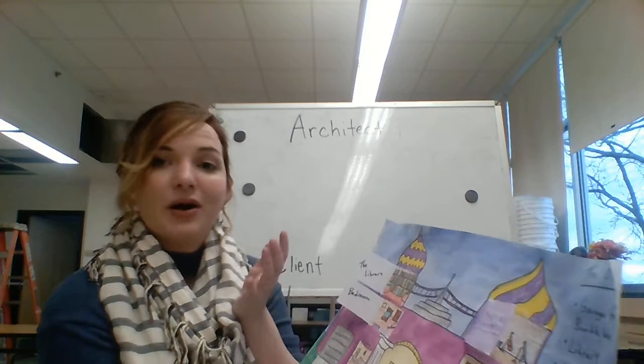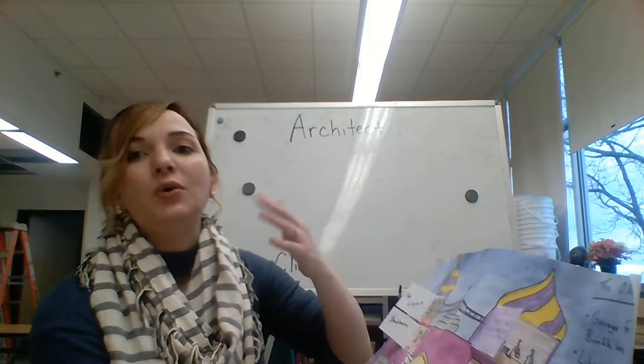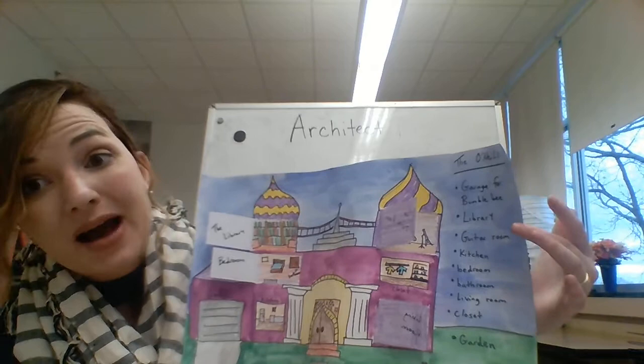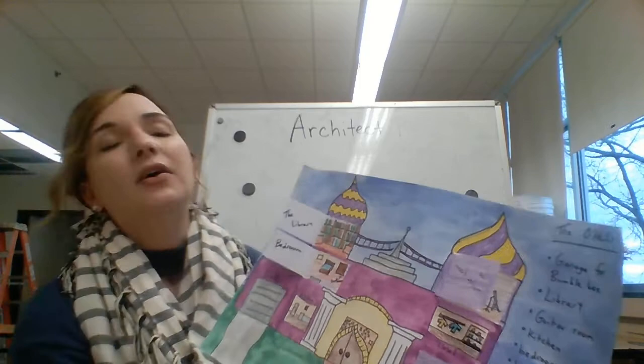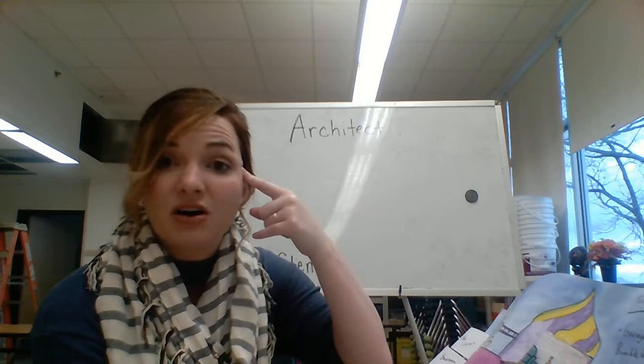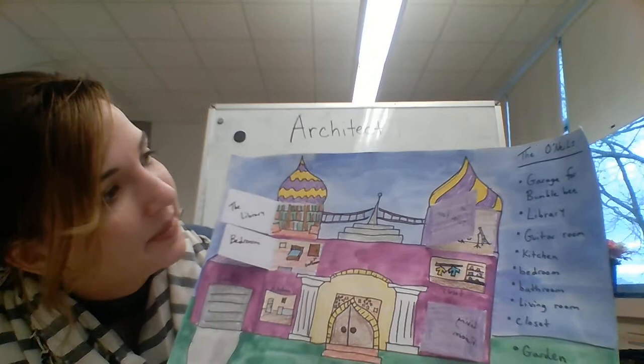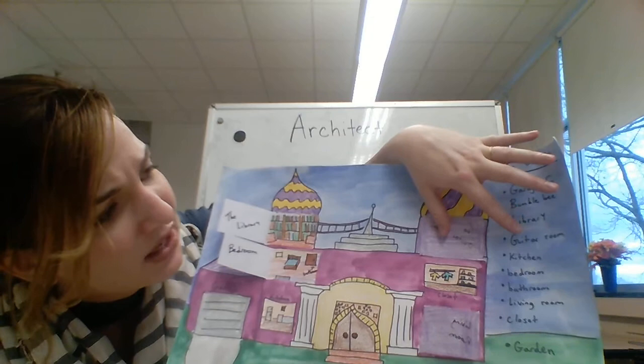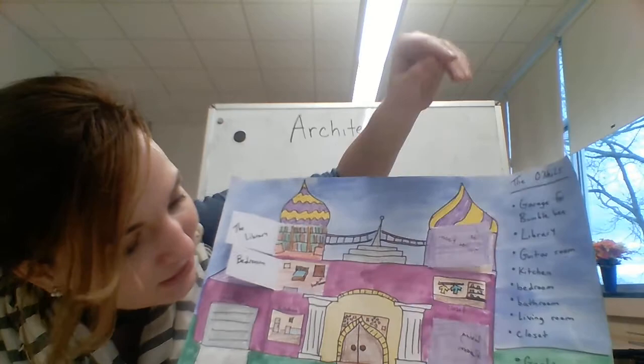My only requirement is that if you choose your client, you have to know something about them, because you've got to know something about them to do this next step. I chose the O'Neills and I know some things about us, so I made a list of things that we would like in a house. I want you to think — if I'm building this for Batman, what does Batman need in a super cool house? You have to start listing it out. This helps organize your thoughts. So I listed: a garage for my car, a library, a guitar room, a kitchen, a bedroom, a bathroom, a living room, a closet, and a garden.